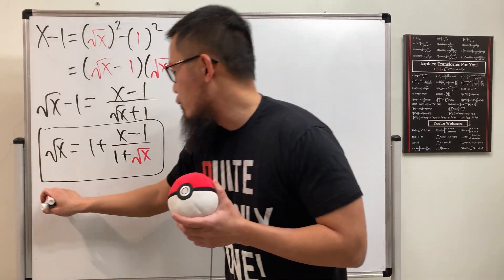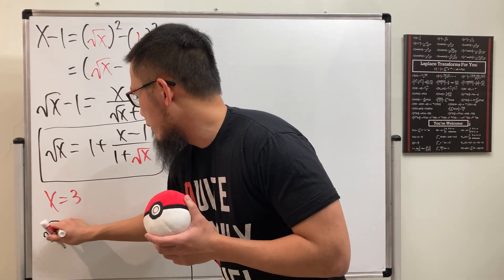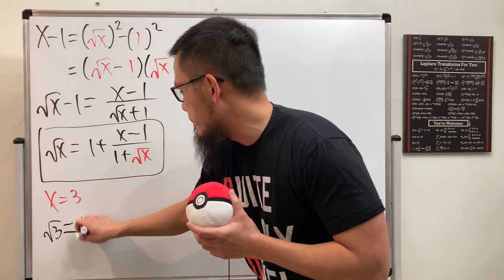Have a look, pick a number that you want. So let's say x is equal to 3. In that case, you get square root of 3 right here. This is equal to, yes, it's just going to be 1 plus...